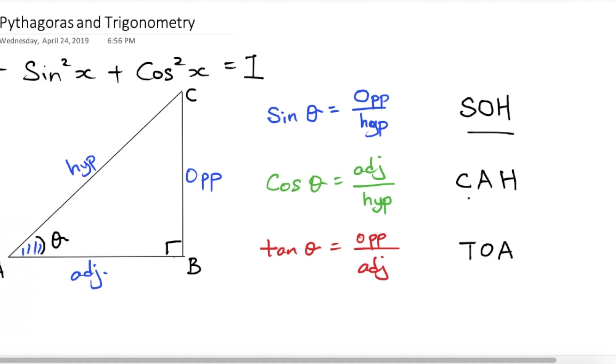And tangent would be T O A. So SOH CAH TOA, right. It's a kind of like a way to help you figure out which side you want. But we are not going into the fundamental of trigonometry, how to find the angle. We are here to prove why is it sin squared x plus cos squared x equals to 1.